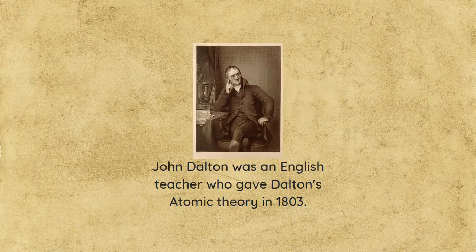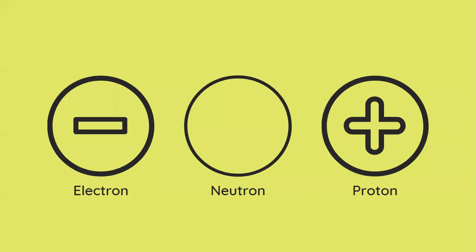Over time, at the end of the 19th century and the beginning of the 20th century, there was a lot of scientific discovery happening. That's when scientists realized that the atom is actually divisible and it consists of three main subatomic particles: electrons, neutrons, and protons. Further research is ongoing to figure out what these particles are further made of.